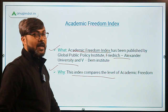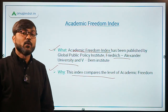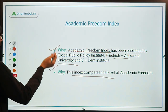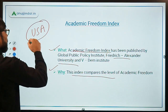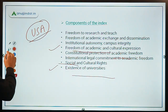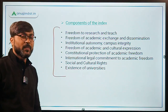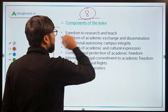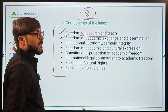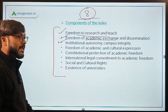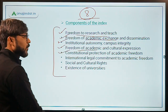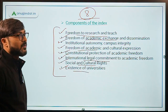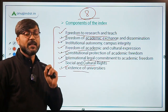This index compares the level of academic freedom across nations. There are eight components of the index: freedom to research and teach, freedom of academic exchange and dissemination, institutional autonomy, campus integrity, freedom of academic and cultural expression, constitutional protection of academic freedom, international legal commitment to academic freedom, social and cultural rights, and existence of universities. You don't have to remember all eight components — this is just for basic understanding.